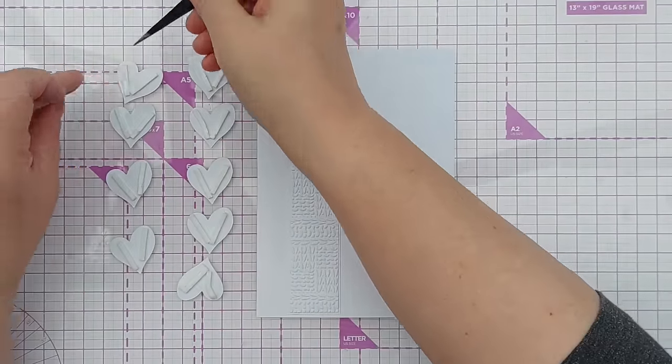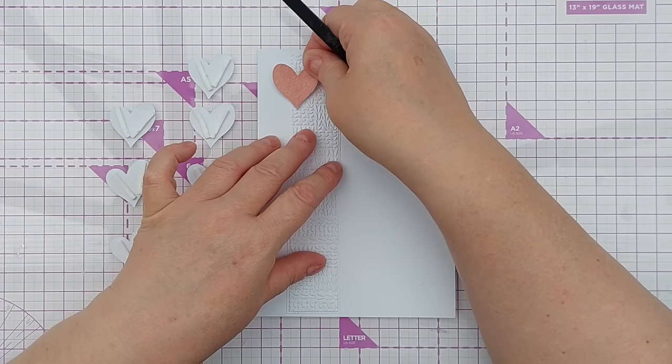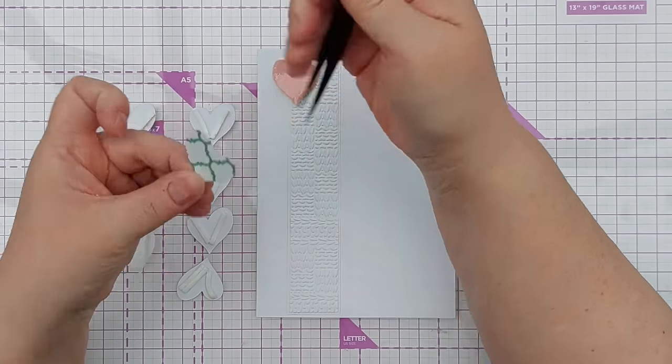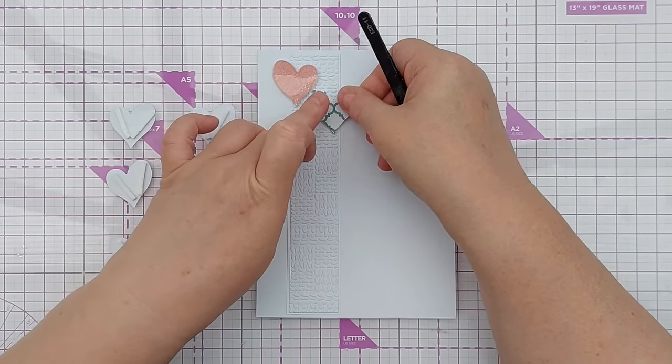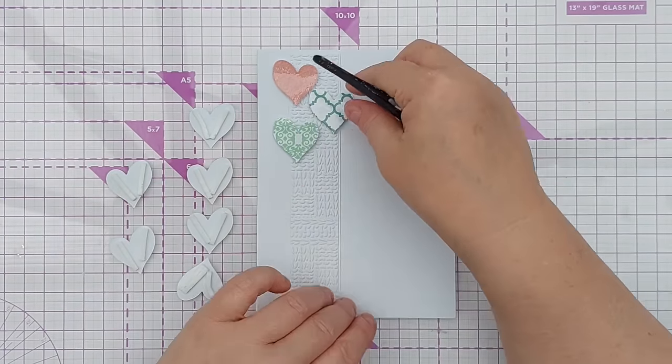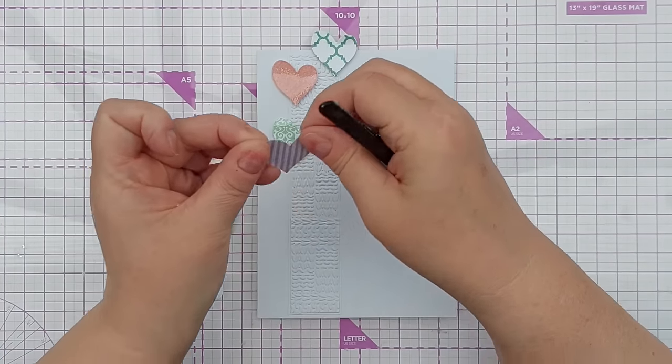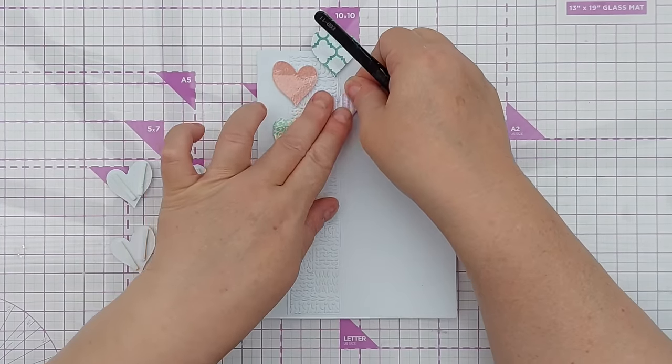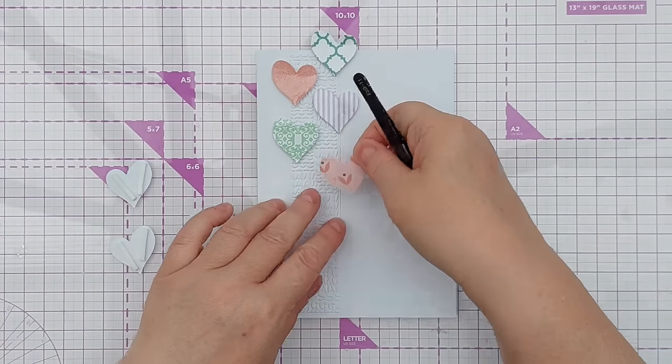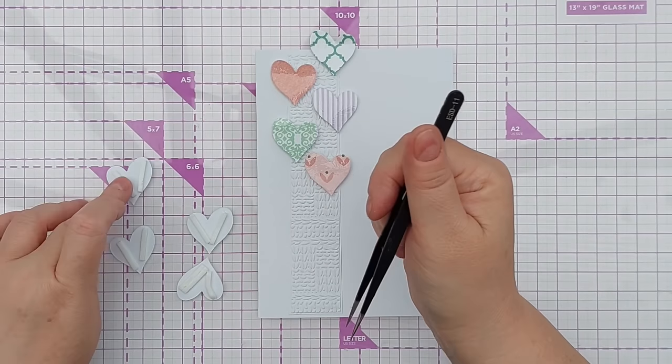Okay, so these have foam tape on and I've taken the release paper off. So I should be able to just pop them in place. So I think that one was meant to go up there. I'm going to try and have them a bit more higgledy-piggledy than completely regular coming down.